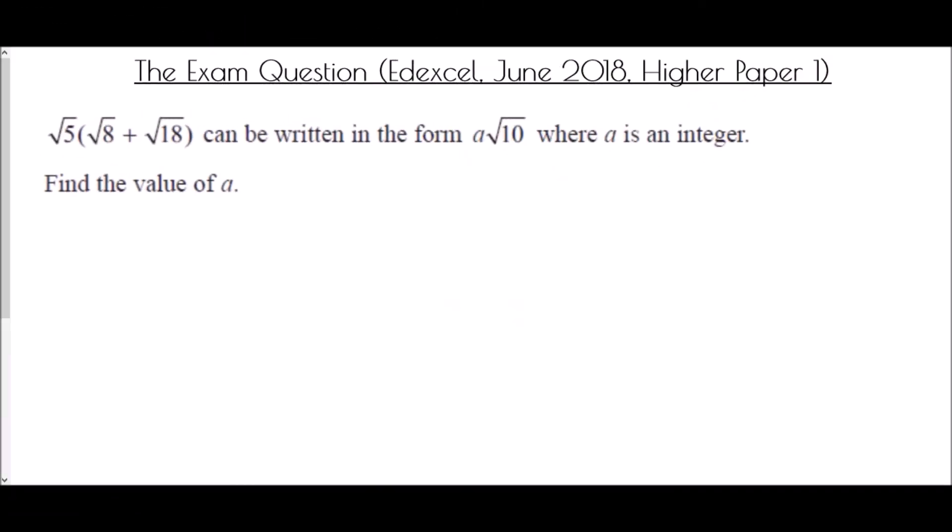And so we end with the exam question — it came from the Edexcel paper in June 2018, Higher paper 1. Paper 1 is important: that means it's a non-calculator question. We could just type this into a calculator if we were allowed, but we're going to have to do everything by hand. It says that root 5 times bracket root 8 plus root 18 can be written in the form a root 10, where a is an integer. Find the value of a.